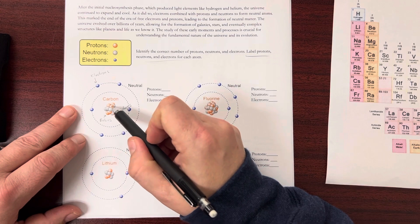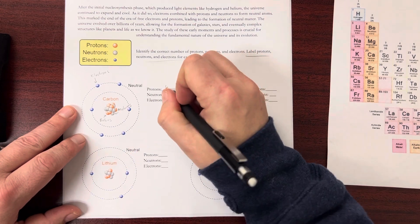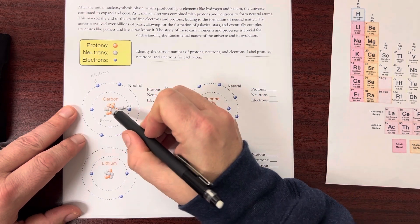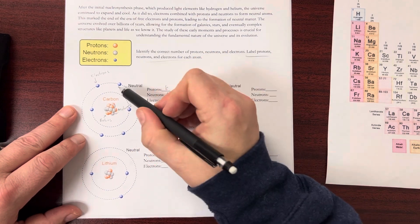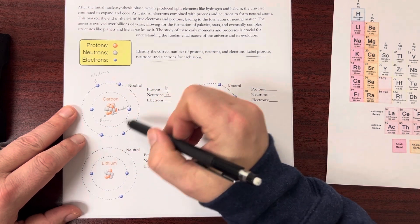Protons, there's 1, 2, 3, 4, 5, 6. And neutrons, 1, 2, 3, 4, 5, 6. Electrons, 1, 2, 3, 4, 5, 6.